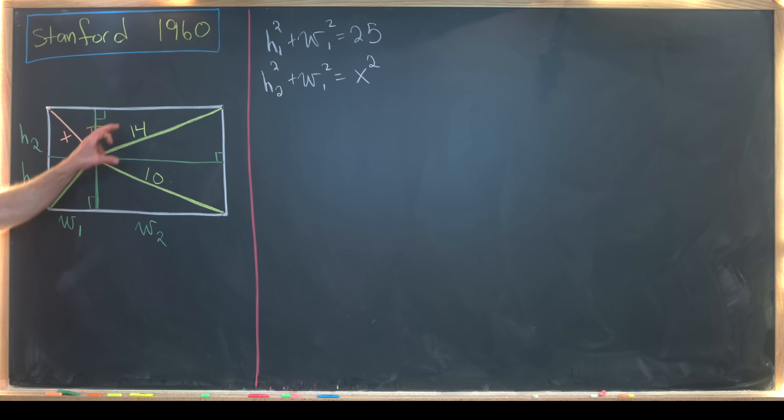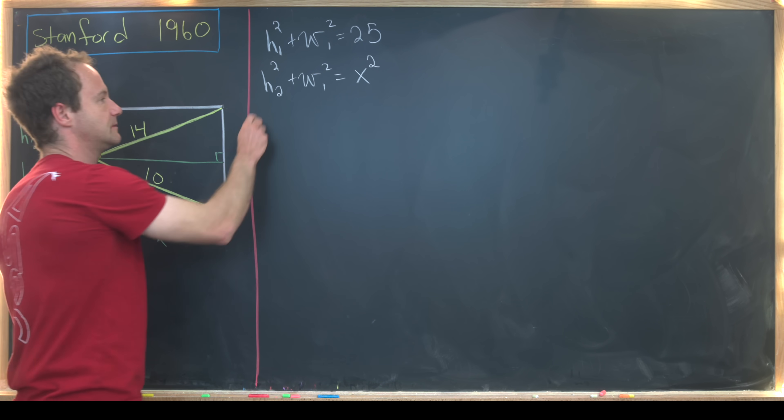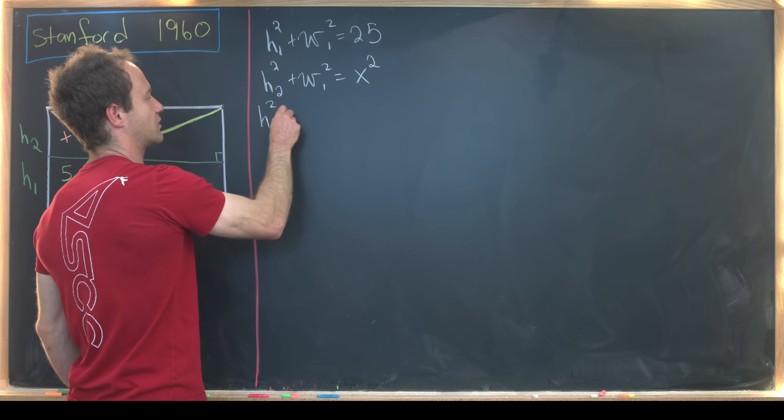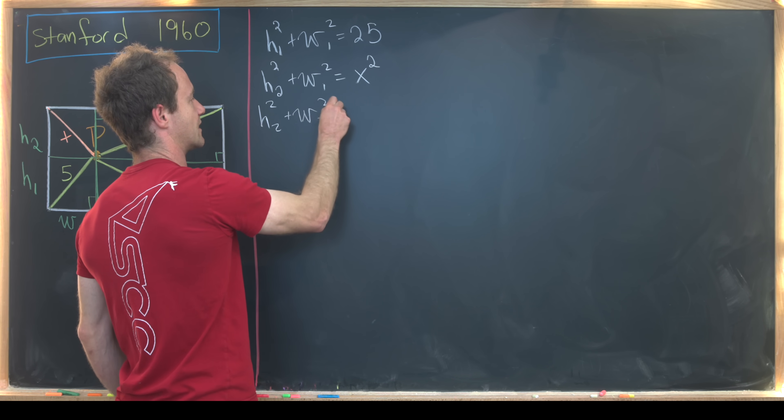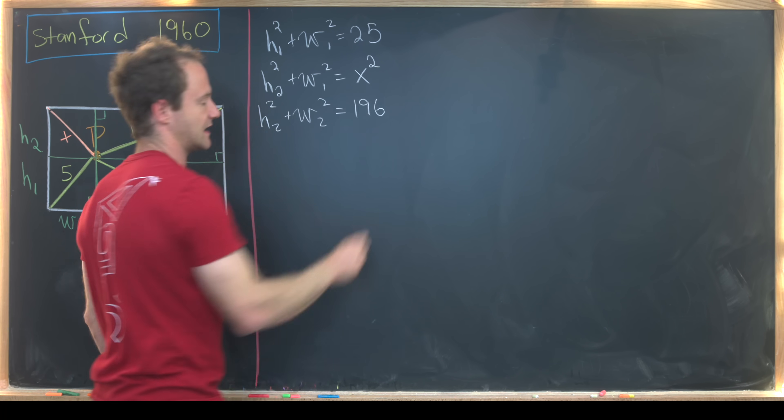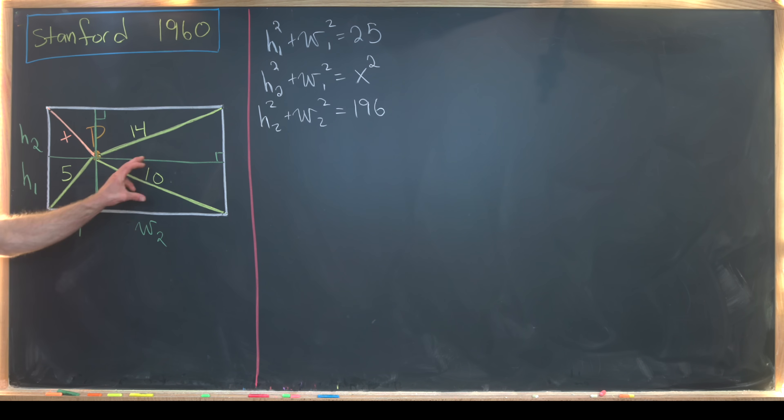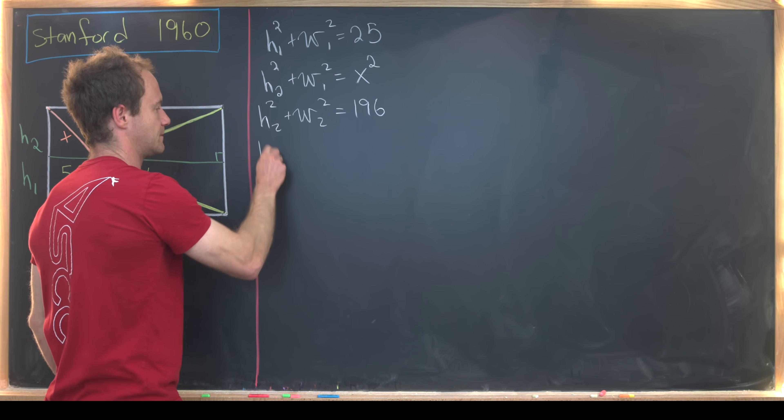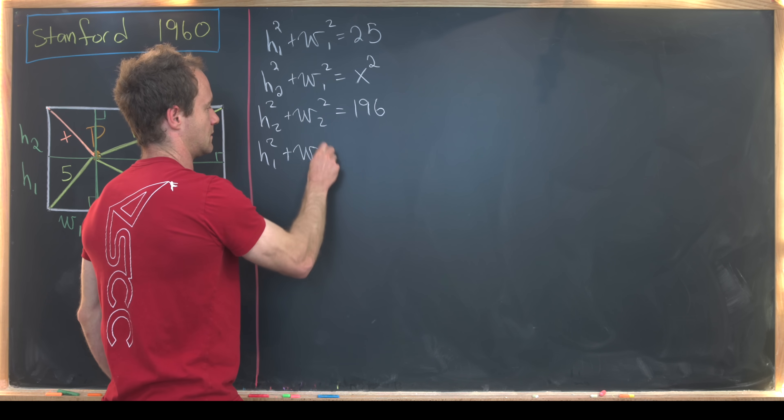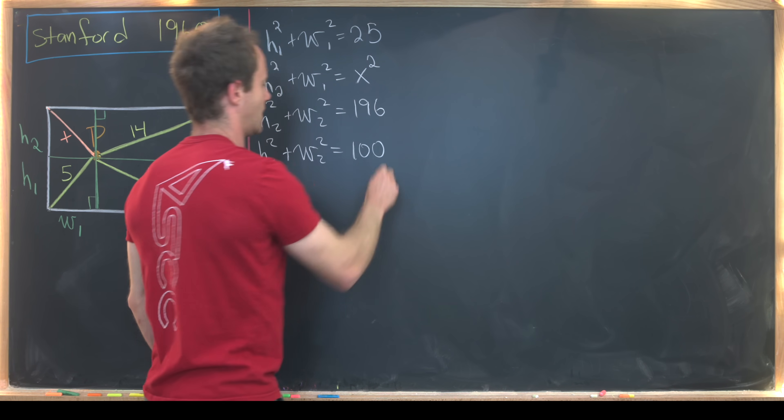Next maybe we'll move to this one. So that's going to be h2 and w2. So h2² + w2² is 14 squared. That's 196. Then finally, this lower right one will have h1² + w2² = 10 squared, which is 100.